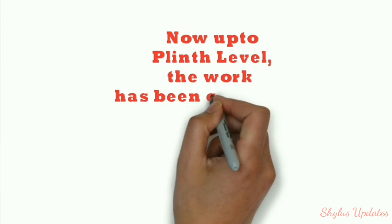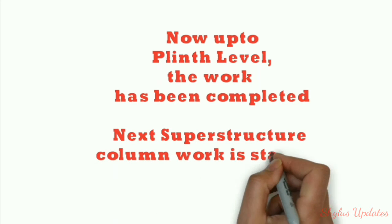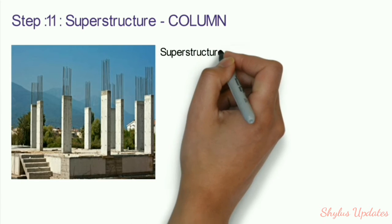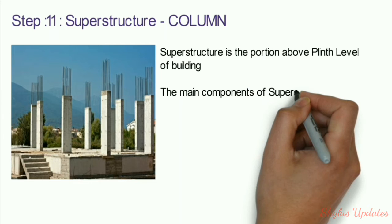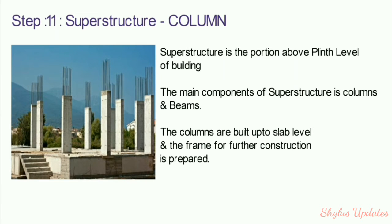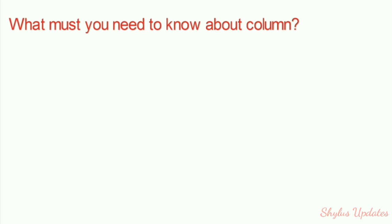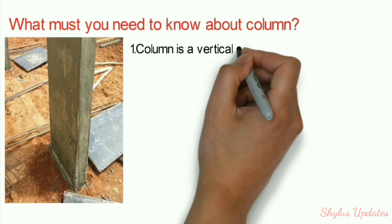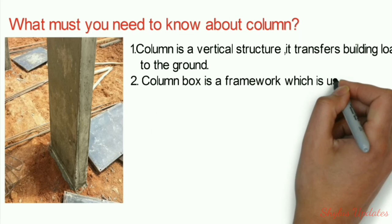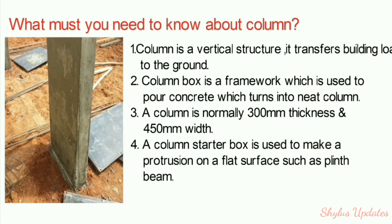Up to plinth level, the work has been completed. Step 11: Super structure column. The super structure is the portion above plinth level. The main components are columns and beams. Columns are built up to slab level. A column is a vertical structure that transfers building load to the ground. The column box is a framework used to pour concrete into the column. The column is normally 300 mm thick and 450 mm wide.